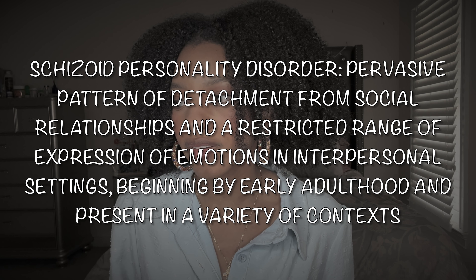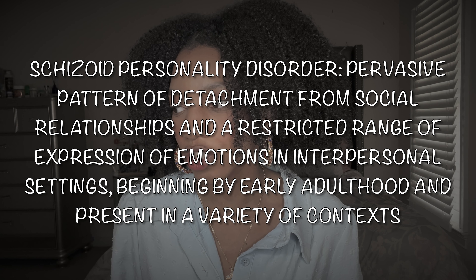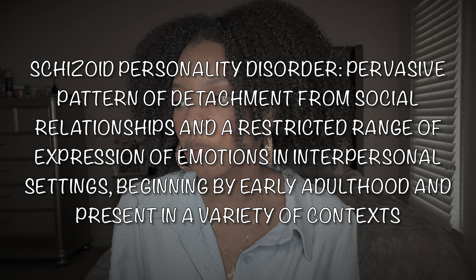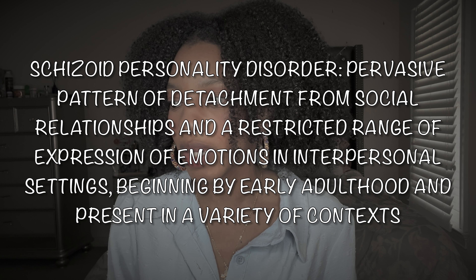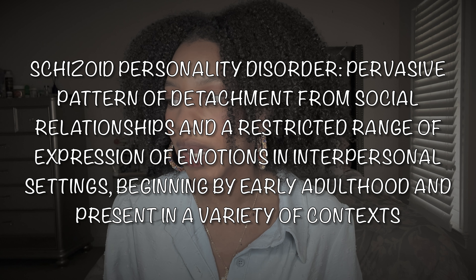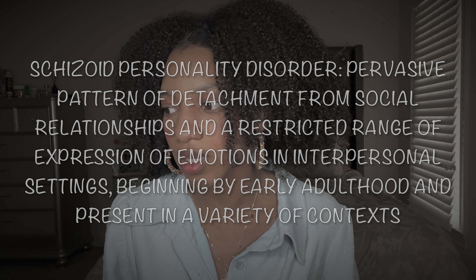Next we're going to move into the second disorder in Cluster A, which is schizoid personality disorder. The DSM defines this disorder as a pervasive pattern of detachment from social relationships and a restricted range of expression of emotions in interpersonal settings, beginning by early adulthood and present in a variety of contexts. To get this diagnosis you have to have four of the following.